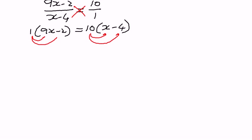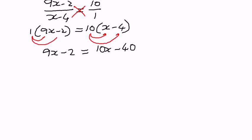When we distribute, 1 times 9x is 9x, and 1 times negative 2 is negative 2, equal to 10 times x which is 10x, and 10 times negative 4 which is negative 40. Since we have x's and constants on both sides, we will get all the x terms to one side. So we subtract 9x from both sides.